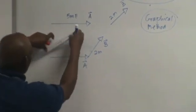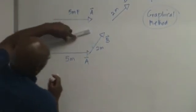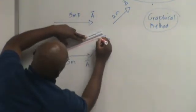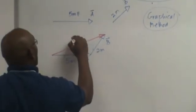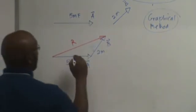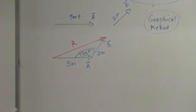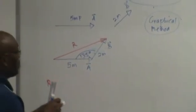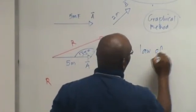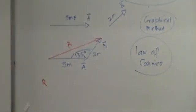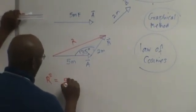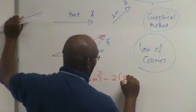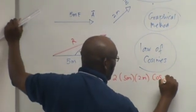So now the resultant goes from the tail of the first to the tip of the second. The R will give you the time is 1, let's assume that this angle is 135. So now in order for us to find R, the resultant, we are going to use the law of cosine. So R squared equals 5 meters squared plus 2 meters squared minus 2 times 5 meters times 2 meters times the cosine of 135 degrees.